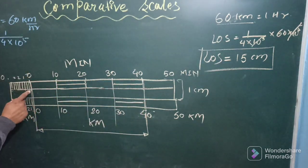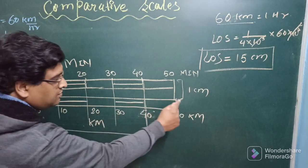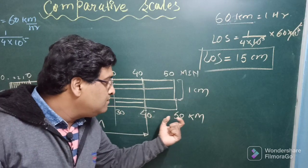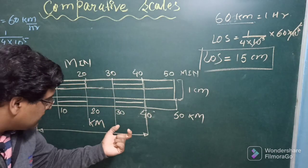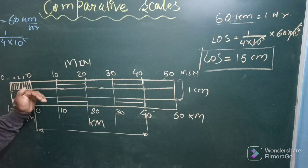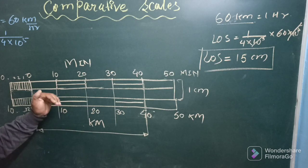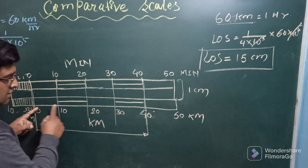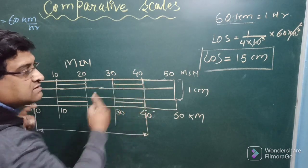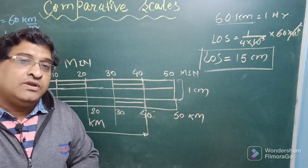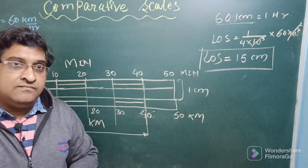Divide the leftmost division into 10 equal parts to get single-minute subdivisions. Then draw another 15-centimeter line just below for the kilometer scale, divided into 6 equal divisions of 10 kilometers each, with the leftmost part divided into 10 to give single-kilometer readings. To find the distance covered in 40 minutes, mark 40 minutes on the minutes scale — the corresponding reading on the kilometer scale directly below gives the distance traveled. This is how comparative (time) scales are drawn. In the next video we will discuss the vernier scale. Thank you very much.